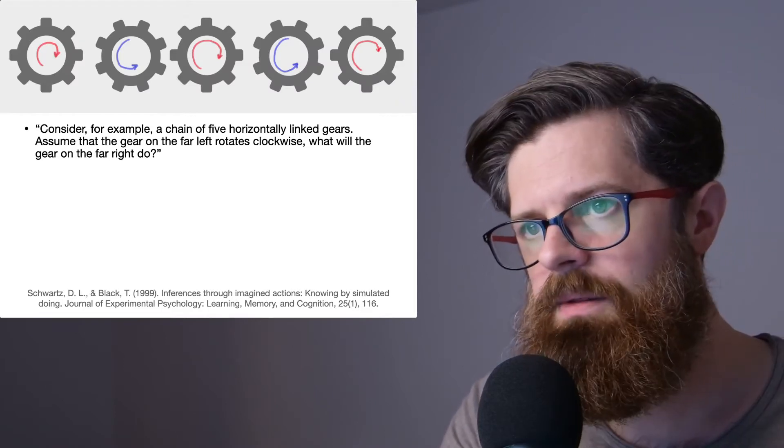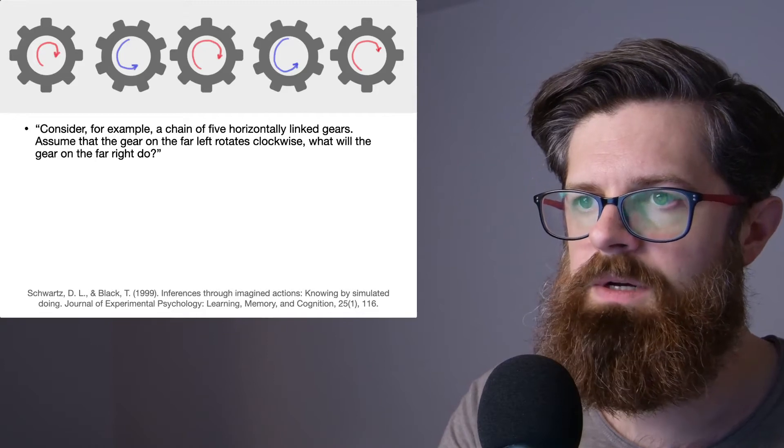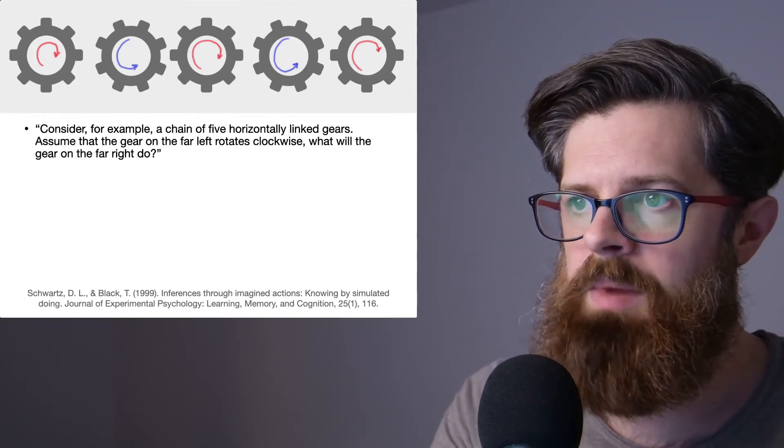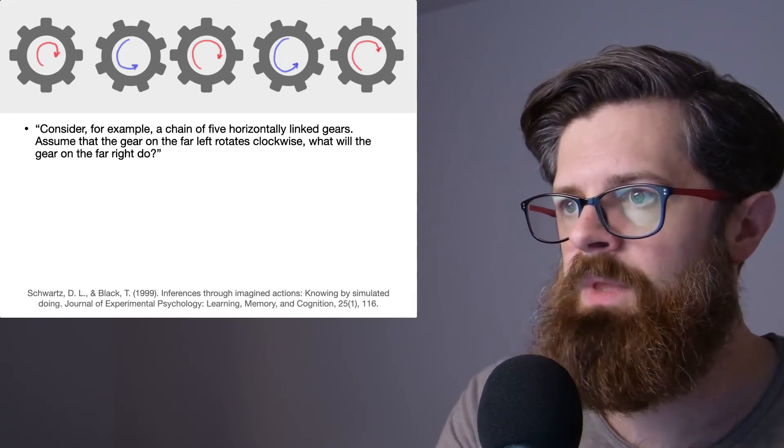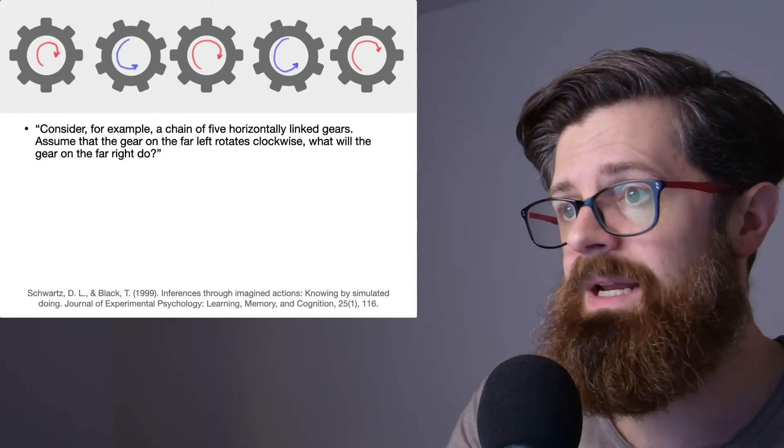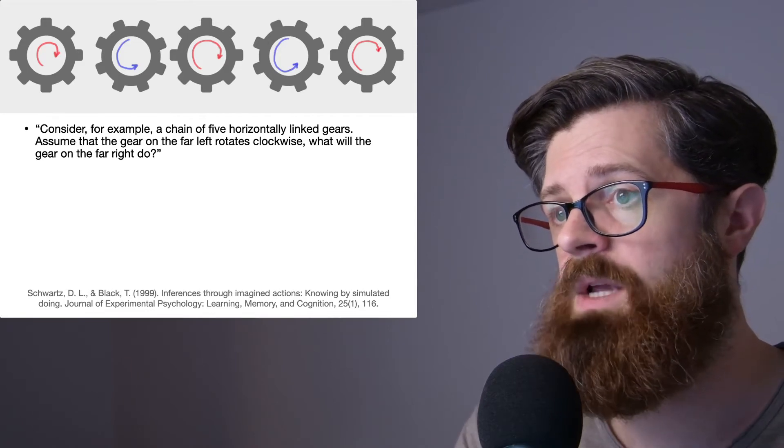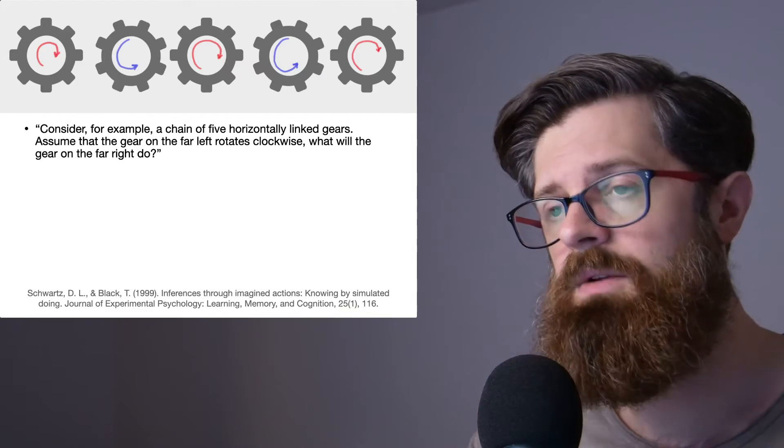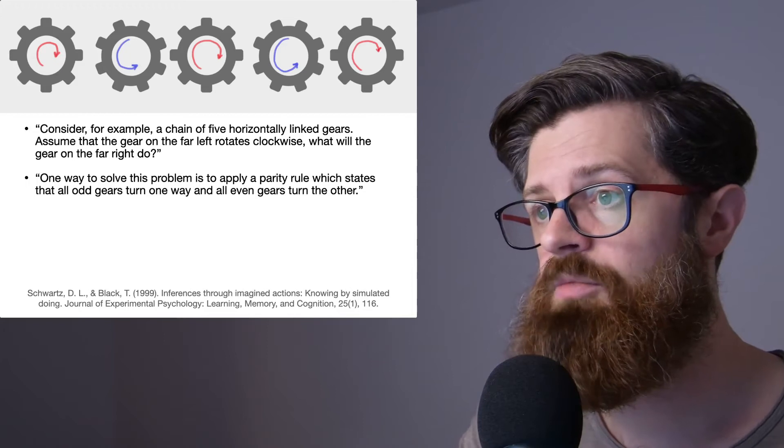So just to think about that in a bit more detail, they talk about this problem, a different problem now to the water tilting, but they talk about the issue of five horizontally linked gears. Consider for example a chain of five horizontally linked gears. Assume that the gear on the far left rotates clockwise. What will the gear on the far right do? And so you can imagine that there are different ways of coming to this answer, of coming to a prediction.